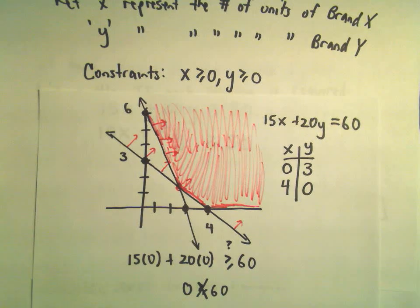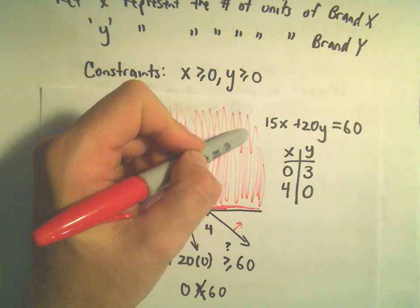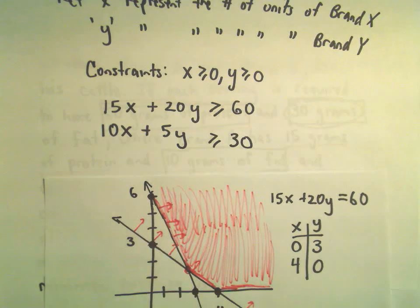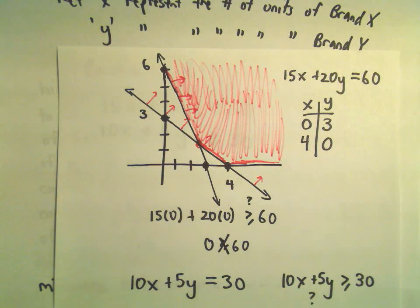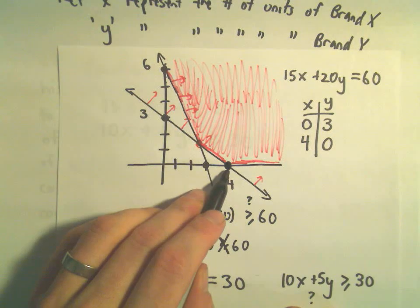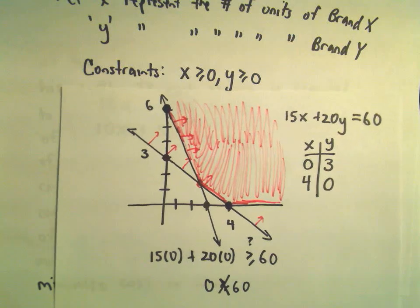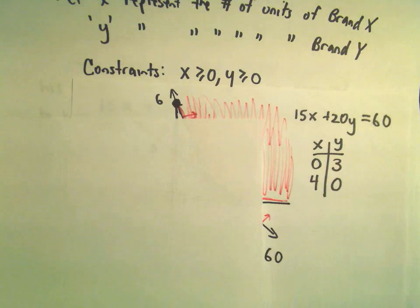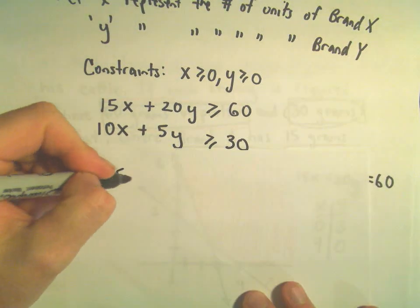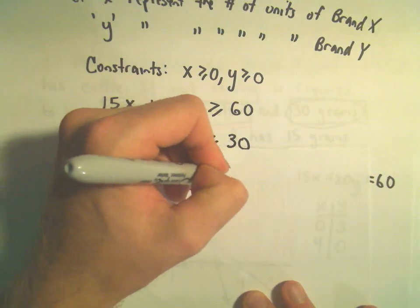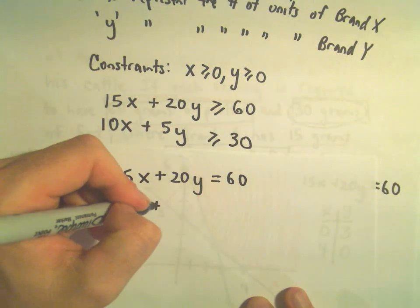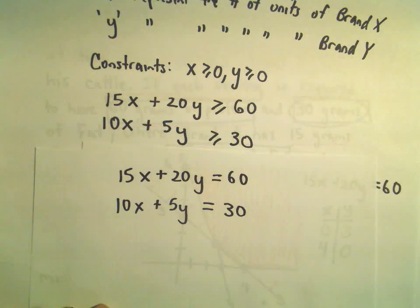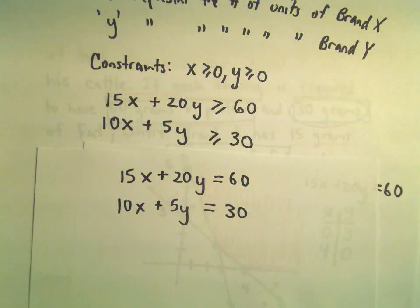Now I just need the corner points. We know one corner point is (4, 0) and another is (0, 6). The only missing one is the intersection of the two lines. So we need to find where 15X plus 20Y equals 60 and 10X plus 5Y equals 30 intersect. I'll use elimination by addition and cancel out the Y terms.